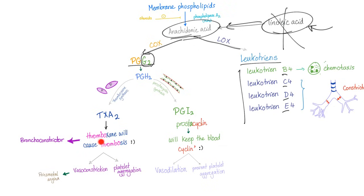Thromboxane — it promotes thrombosis, but it has many functions. First, vasoconstriction: when you're bleeding and want to coagulate, vasoconstrict the vessel to decrease the surface area from which blood is lost. It also promotes platelet aggregation to form the thrombus, and it's a bronchoconstrictor. Prostacyclin in the endothelium keeps blood flowing smoothly — it promotes vasodilation and inhibits platelet aggregation. It's the exact opposite of thromboxane A2.